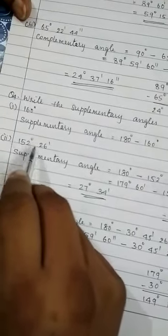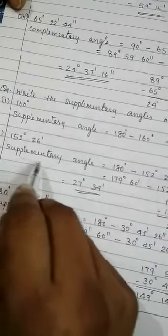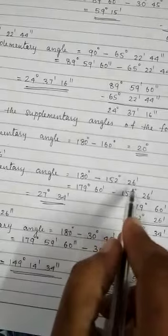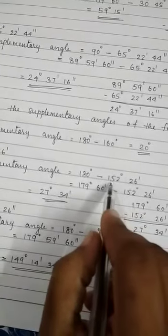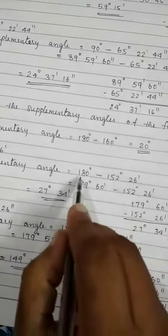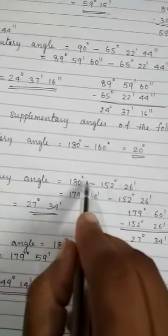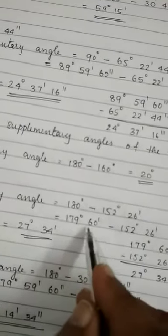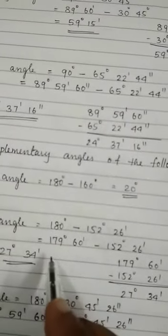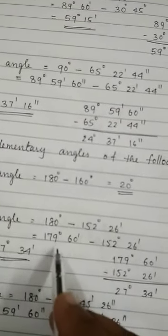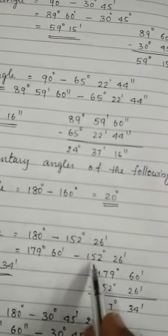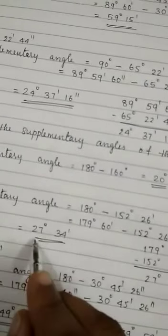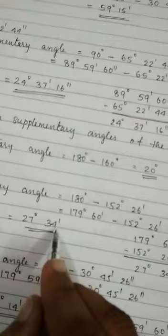Next, 152 degree 26 minutes. Supplementary angle is equal to 180 degree minus 152 degree 26 minutes. Since the subtrahend is in degrees and minutes, the minuend is also converted. We can write 180 degree as 179 degree 60 minutes. So it becomes 179 degree 60 minutes minus 152 degree 26 minutes. Subtracting as usual, the answer is 27 degree 34 minutes.